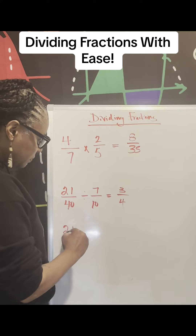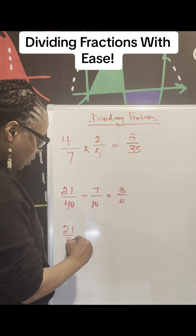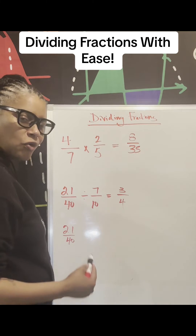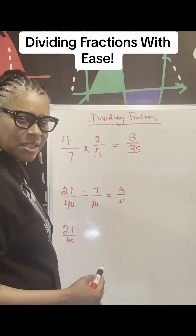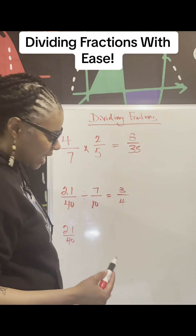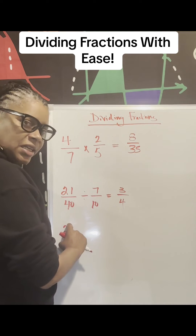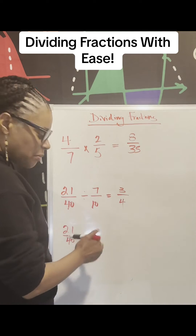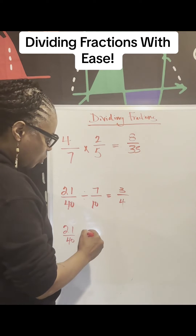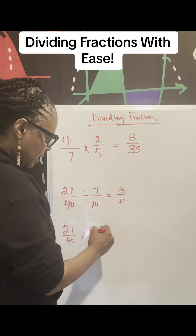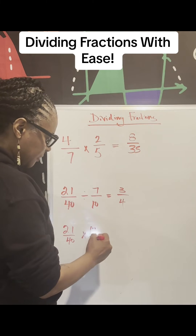Now check it against the way that you learned it. You learned this: 21 over 40, and you all probably use that keep-change-flip, which I don't like. Dividing a number is the same as multiplying by its reciprocal — that's what I like.